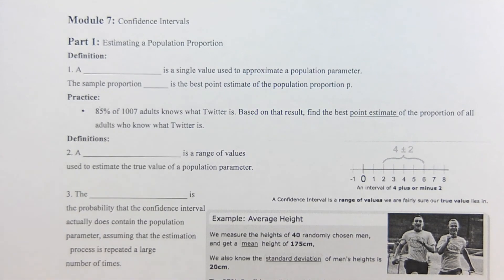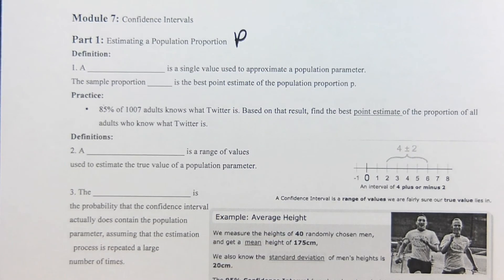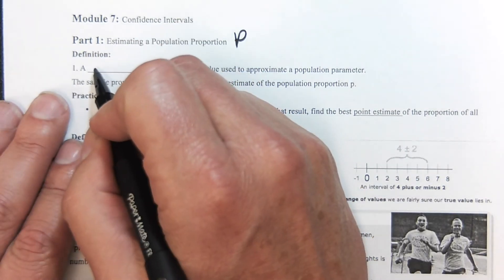Hello there, we are in Chapter 7, Module 7, and this is all about confidence intervals. There are three types of confidence intervals, and this particular video talks about a population proportion, that is our p, and let's start out with some vocabulary.